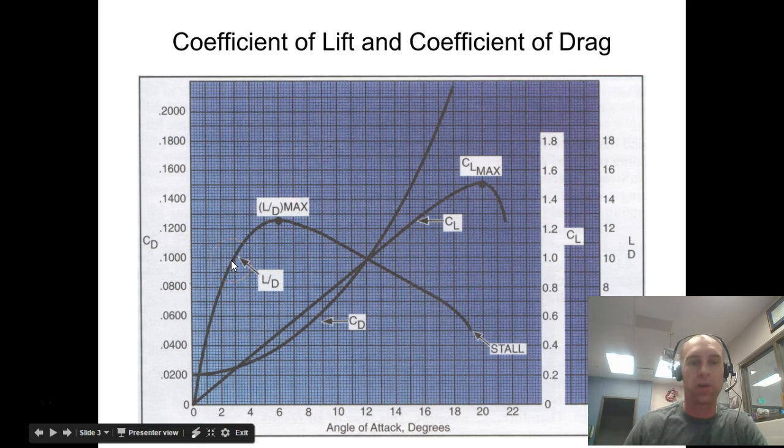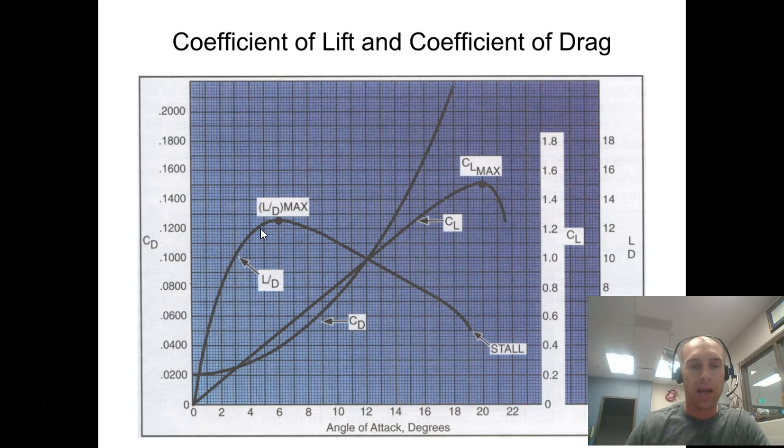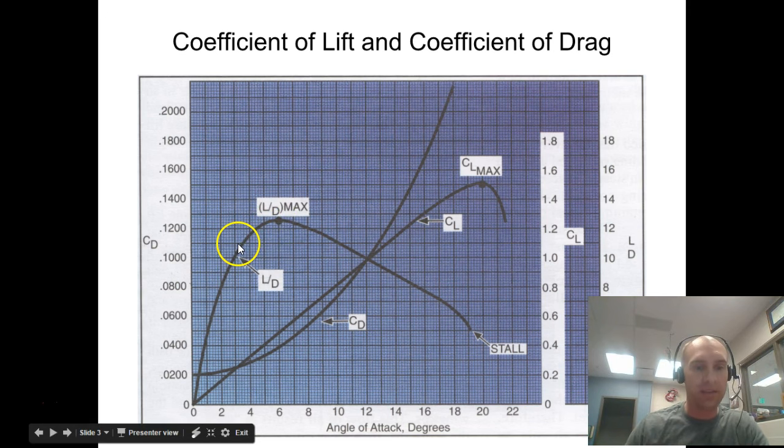This is lift divided by drag. You have the largest lift divided by drag maximum here at about 6 degrees - the most lift and the least amount of drag. That's the most efficient flight with respect to lift and drag.